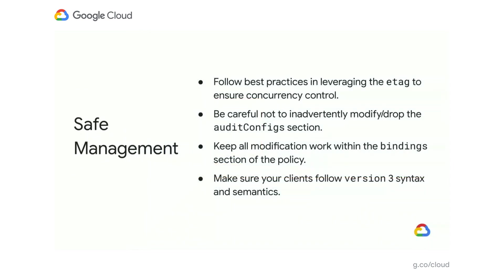Last recap of the breakout: make sure to preserve the ETag throughout the policy modification process. Only touch the fields you need when modifying. And make sure any programmatic integrations you develop follow the assumptions baked into the version 3 policy schema. And that's all I have for today. I'd like to thank everyone for watching. And if you can't wait to get even more IAM info, we have a couple of other great sessions dropping this week covering IAM Recommender and Policy Intelligence — both of which can be invaluable in helping you achieve least privilege in your environments. Thanks again and have a great day.